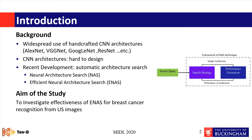NAS automatically searches for a good architecture for your dataset by using an RNN as a controller to generate a CNN architecture, and reinforcement learning to improve the controller's generation. The follow-up method is Efficient Neural Architecture Search, which is ENAS.